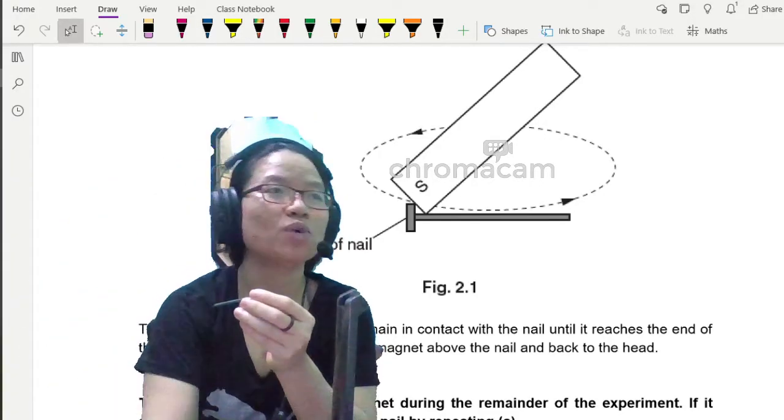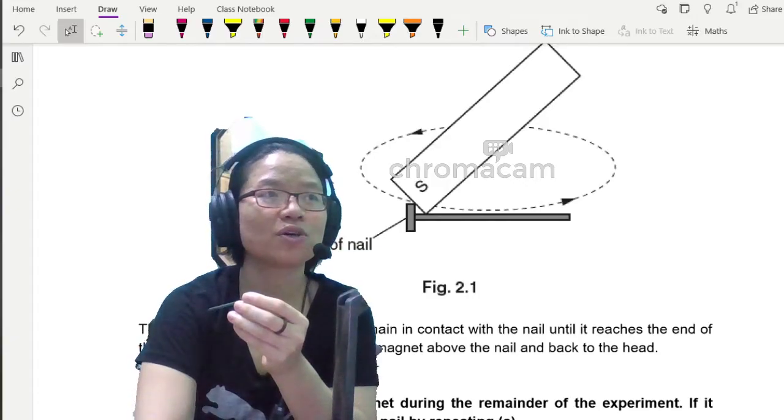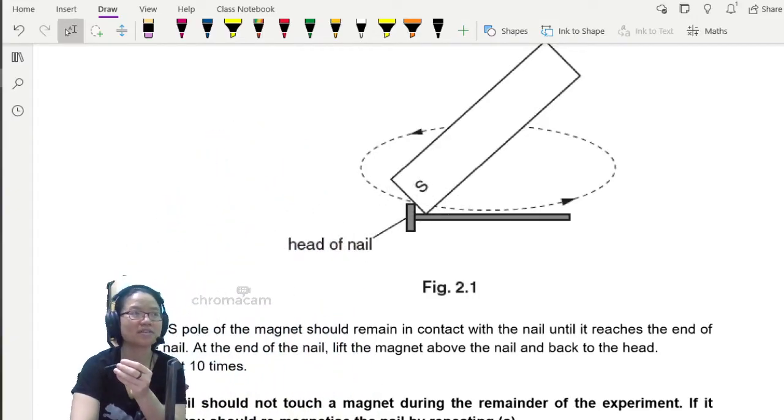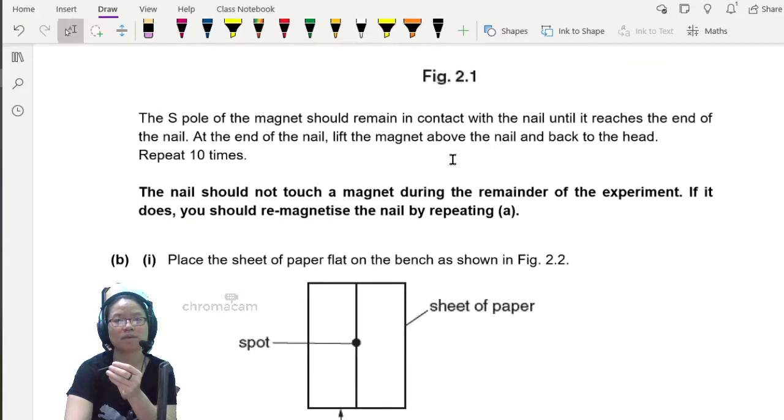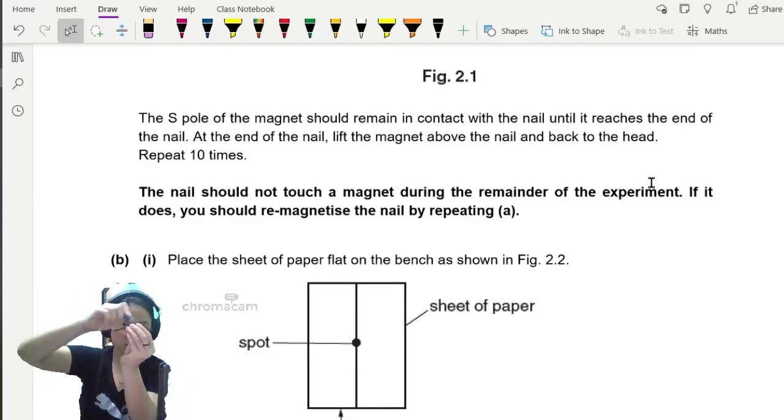Alright, so this is not a very good drawing. But if you follow the word description down here, if you follow the word description that is given, it says that the pole of the magnet should remain in contact with the nail until it reaches the end of the nail. At the end of the nail, lift the magnet above the nail and back to the head. So touch the magnet, drag, lift. Go to the front, touch the magnet, drag, lift. So this is the circular part that they're talking about.